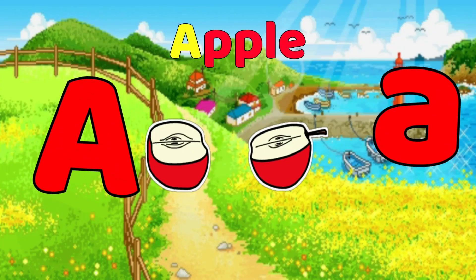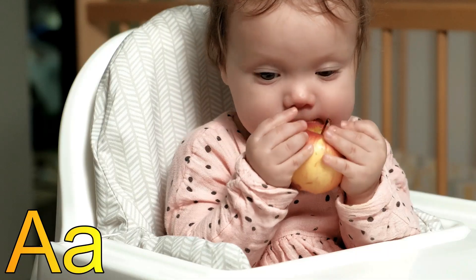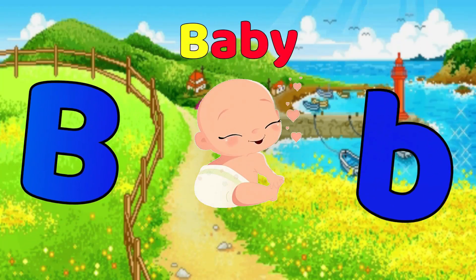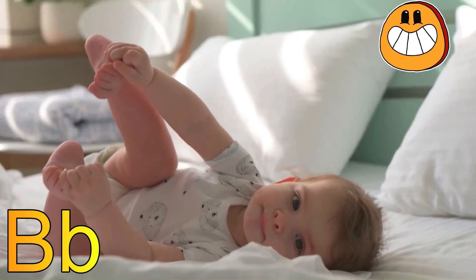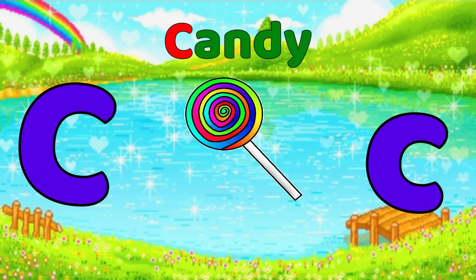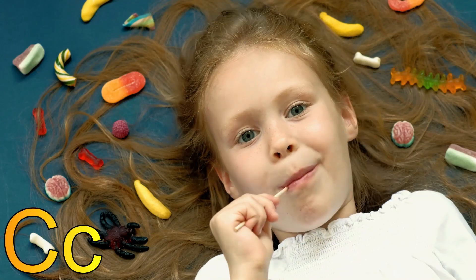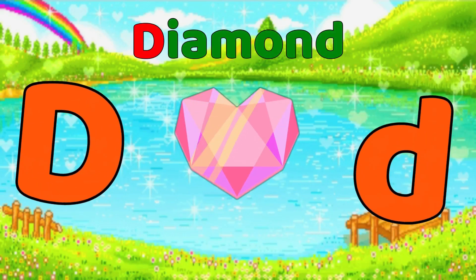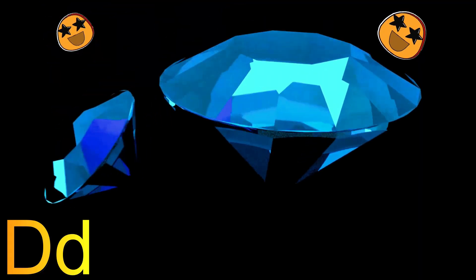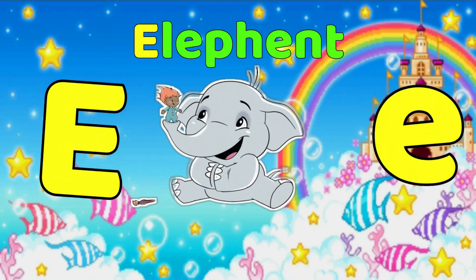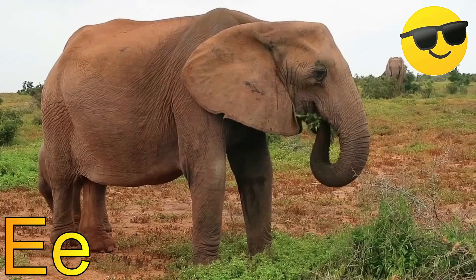A is for Apple. A-A-Apple. B is for Baby. B-B-Baby. C is for Candy. C-C-Candy. D is for Diamond. D-D-Diamond. E is for Elephant. E-E-Elephant.